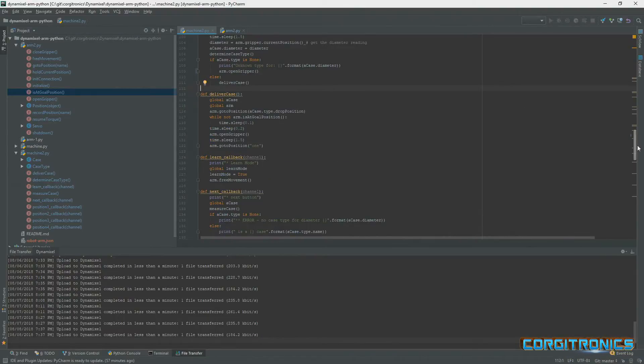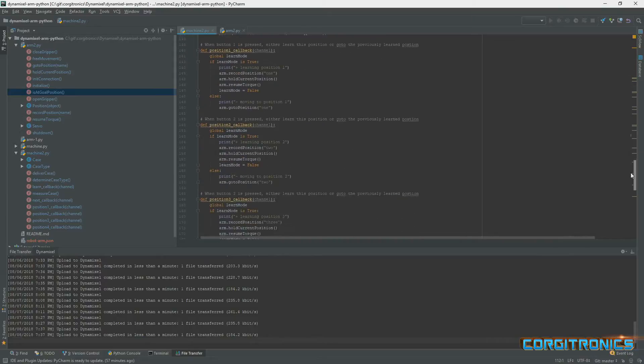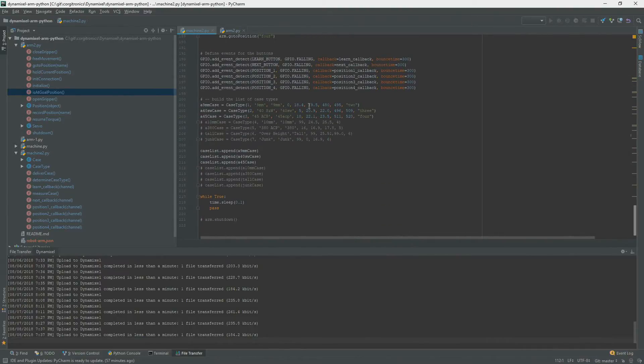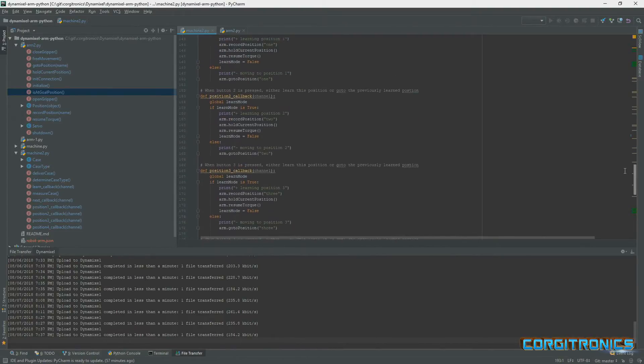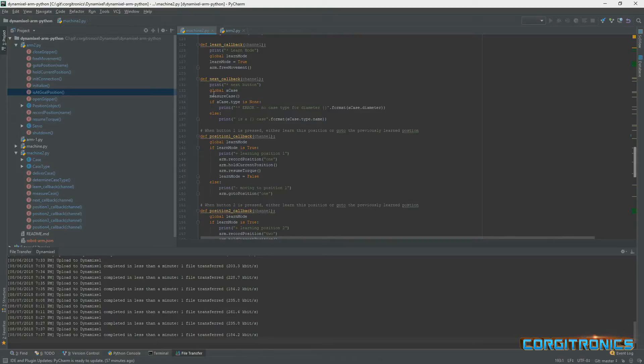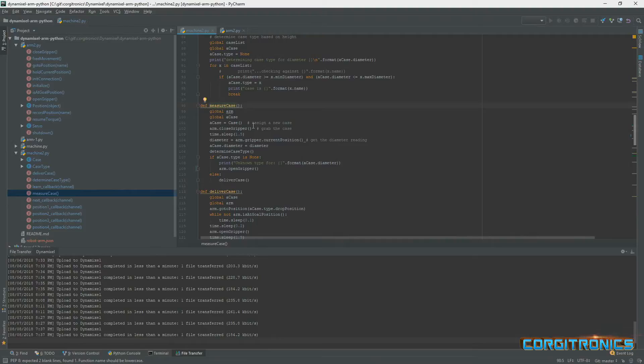Then a simple program over here makes various, just runs it through. Python commands have interrupt the, accept the interrupts, and then perform the particular function such as learning the position or moving to the position. And then if the next button is pressed, it's very simple. It just measures the case, which is all that does is pretty much close the gripper, and then it determines the case type.